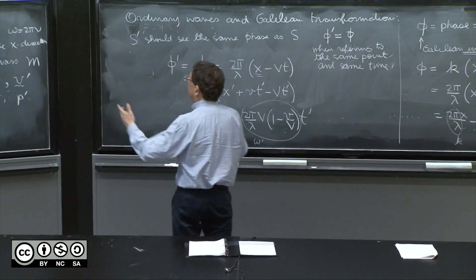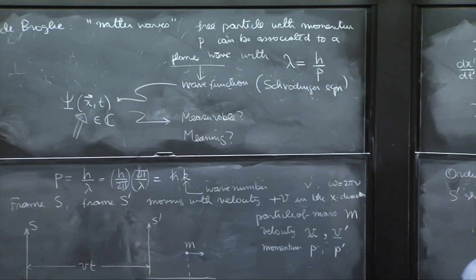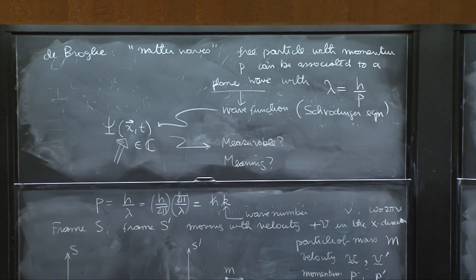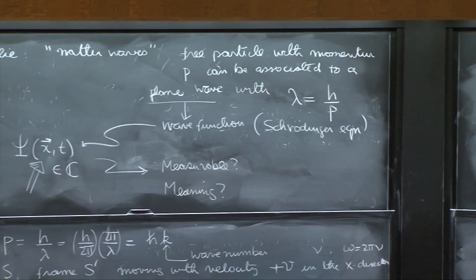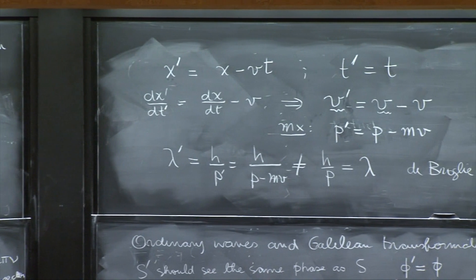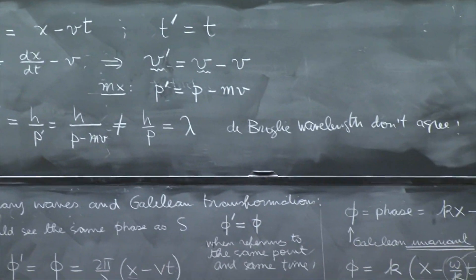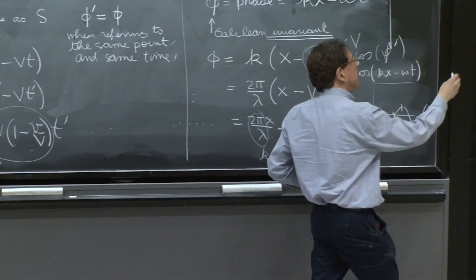We've talked a lot about de Broglie saying that the wavelength is given by h over p. But we have not said much yet about the frequency of the waves. So what is the frequency of those matter waves?